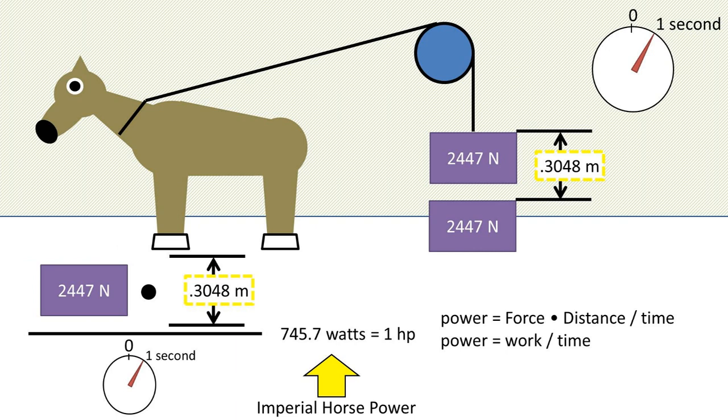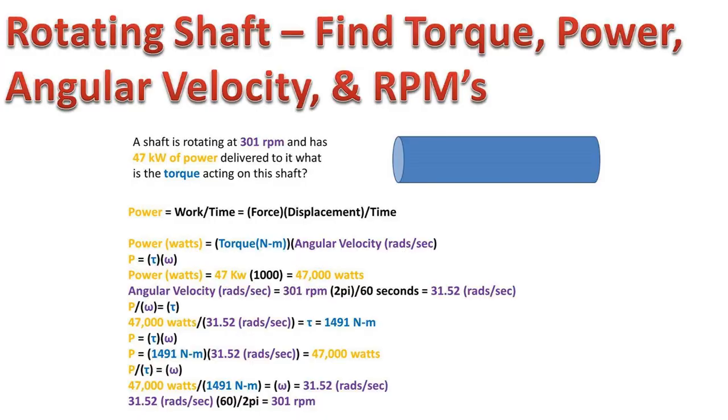Now we can convert all of those values to metric and plug it into the power formula. We get 745.7 watts, which is equal to one horsepower.